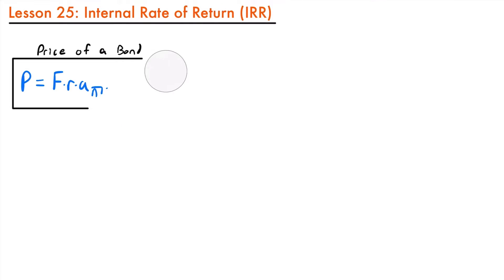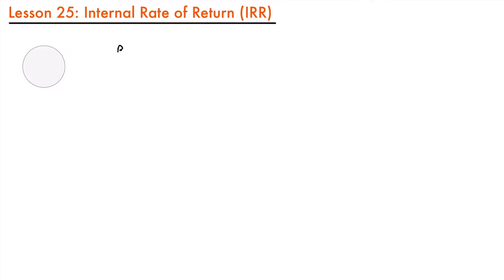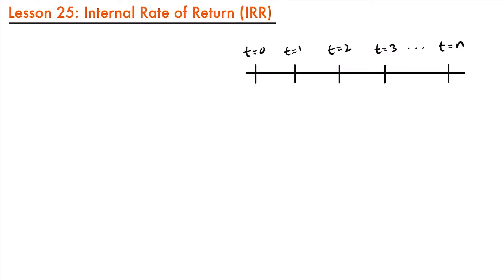More generally, if we look at a timeline for a set of cash flows in and cash flows out, consider a transaction that consists of a single amount C sub 0 invested at time equals 0, and then several future payments to be received at times 1, 2, and 3, up until some time in the future T equals N. Those amounts are labeled C sub 1, C sub 2, C sub 3, all the way up through C sub N.